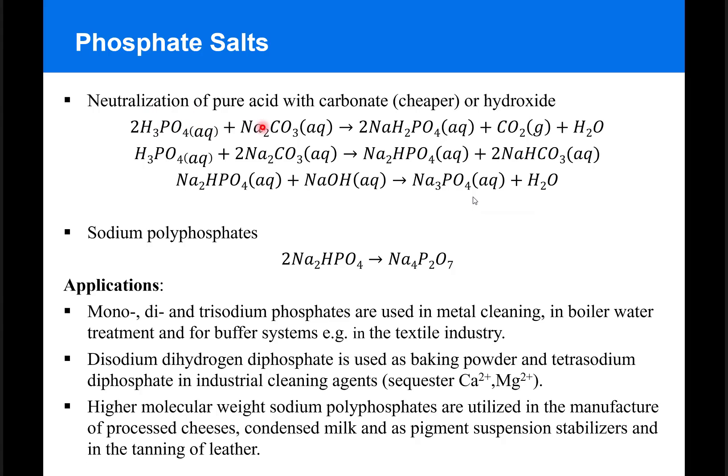When you react the pure acid with sodium carbonate, depending on the ratio of the base to the acid, you can obtain either the monosodium phosphate or the disodium phosphate.